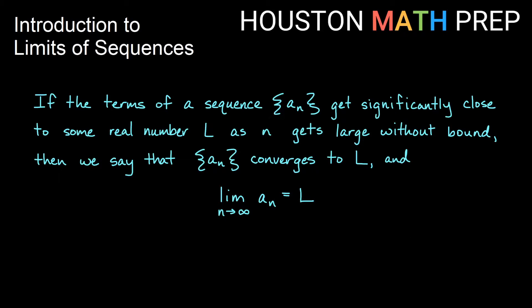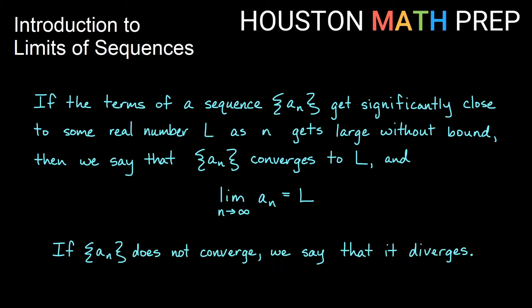If our sequence a sub n does not converge to a real number L, then we say that it diverges. That may mean that it adds up to an infinite amount, or it may mean that it just never settles down at one specific real number.